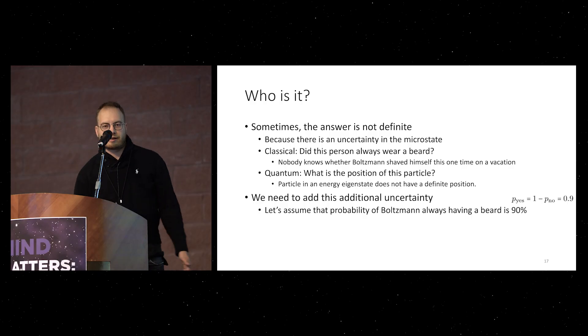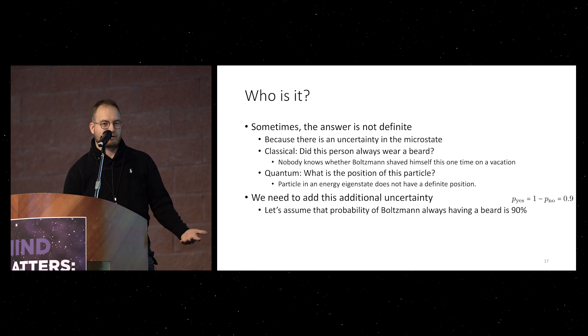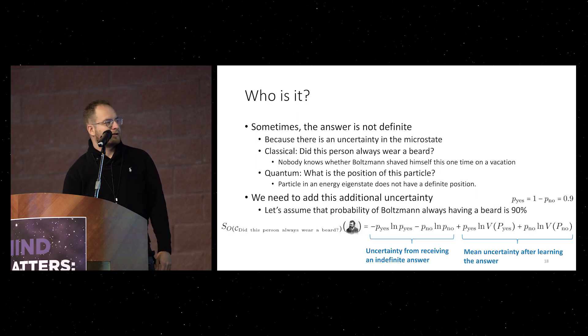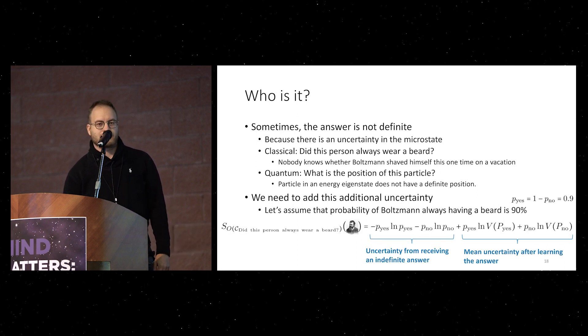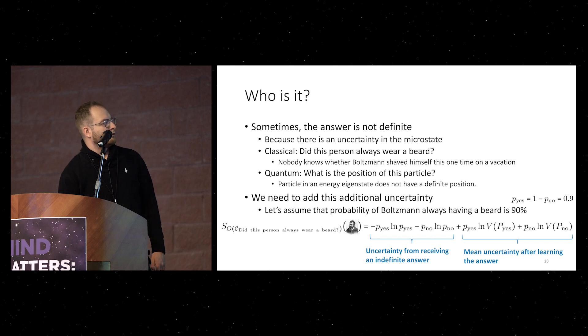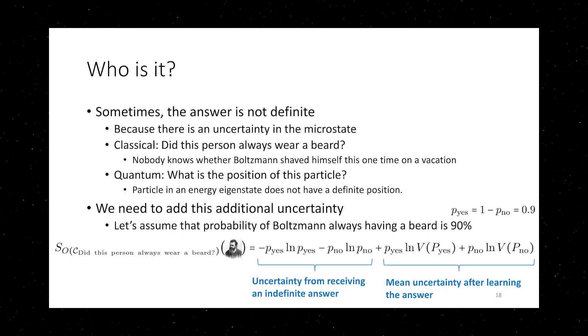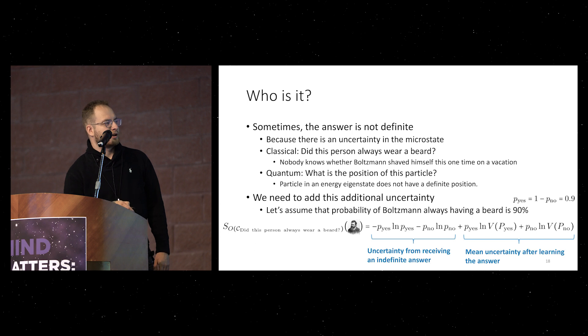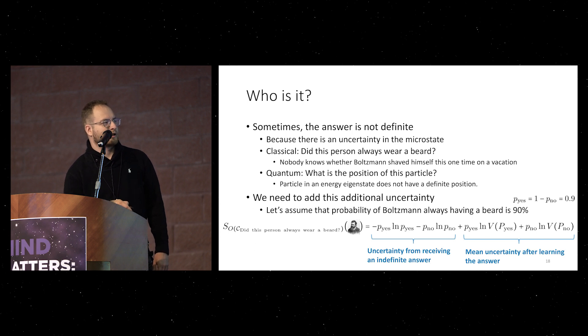So let's assume that probability of Boltzmann having always a beard was 90 percent. How would we modify this uncertainty we have about the system? Well, we would just add the uncertainty from receiving an indefinite answer. So if you ask me, did this person always wear a beard? Then the knowledge you will have after I answer, like with 90 percent he always did, will be this uncertainty from receiving an indefinite answer, plus mean uncertainty after learning the answer.